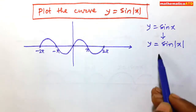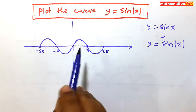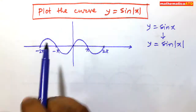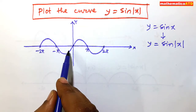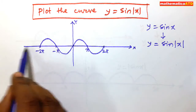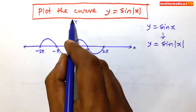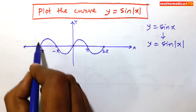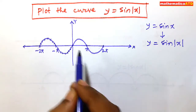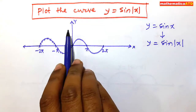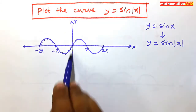Now to draw the curve for y is equal to sin of modulus of x: neglect the curve for x less than 0, that means the curve on the left side of the y-axis. Then take the mirror image about the y-axis for x greater than 0. That means you neglect the curve on the left side of the y-axis, and take the image of the curve on the right side of the y-axis, using the y-axis as the mirror.